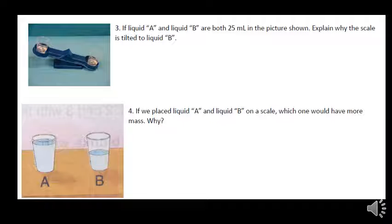Liquid A and B are both 25 milliliters. Explain why the scale is tilted over towards B. They're both the same volume. Well, obviously it's tilted because I have more mass on this side, and the fact that I have more mass with the same amount of volume...